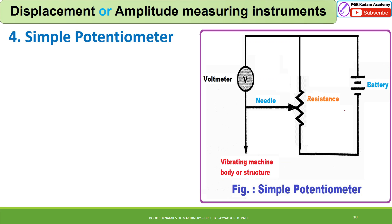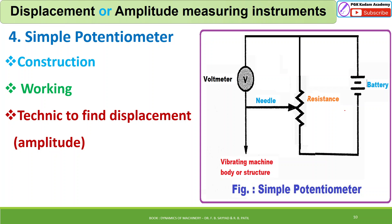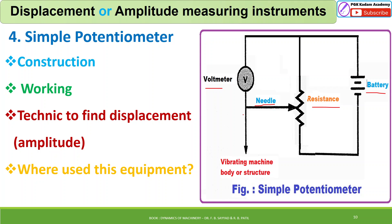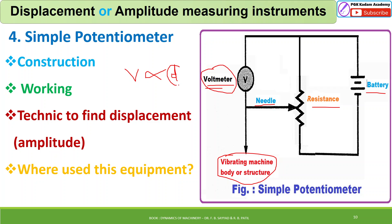The fourth instrument is the simple potentiometer. In its construction, there is a needle, a resistance, a battery, and a voltmeter. The needle is connected to the vibrating machine or body and is allowed to slide along the resistance. As the body vibrates, the needle slides, causing a change in voltage that is displayed on the voltmeter. This voltage is proportional to the displacement d (or x).